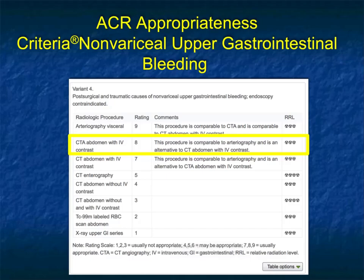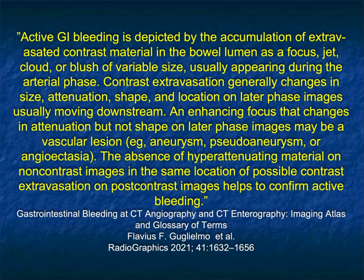In variant four — perisurgical and traumatic causes of non-variceal upper GI bleeding when endoscopy is contraindicated — CT is right up there with classic arteriography, and the state of the art is doing CT first. Active GI bleeding is depicted by the accumulation of extravasated contrast material in the bowel as a focus, jet, cloud, or blush of variable size, usually appearing during the arterial phase. Contrast extravasation generally changes in size, attenuation, shape, and location on later phases. An enhancing focus that changes in attenuation but not shape on later-phase images may be a vascular lesion such as an aneurysm or pseudoaneurysm.